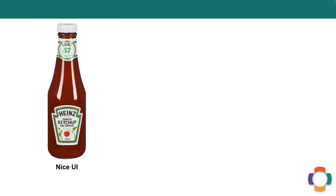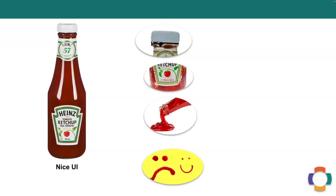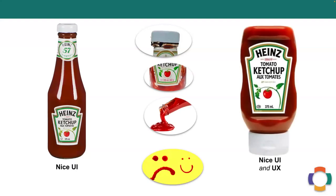You might have seen this tomato sauce glass bottle before. And while when you first buy it, it looks really attractive. When you actually use it over time, there are all kinds of experienced things that aren't great for you as a user — like the cap gets all gunky and gummy, the sauce is all at the bottom and it's hard to get out, and when you finally do get it out, it spills everywhere. Now we have a nice interface and a nice experience: there's no more gummy top, the upside-down design means the sauce is always at the bottom, and you have more control as a user. So that's the difference between user interface and user experience.